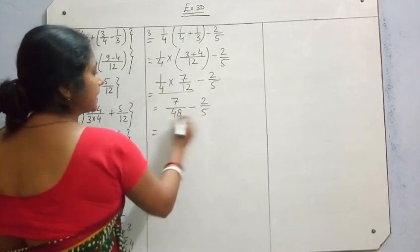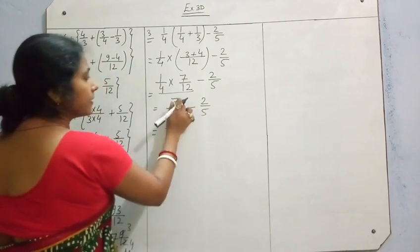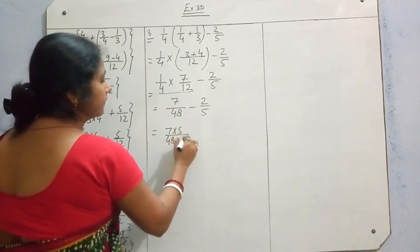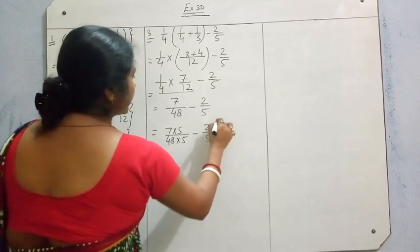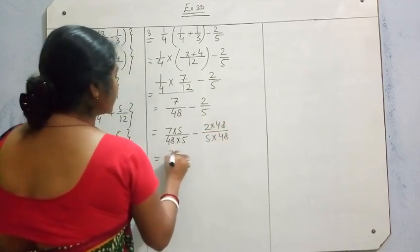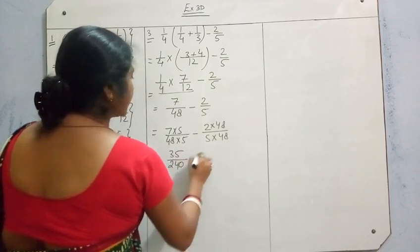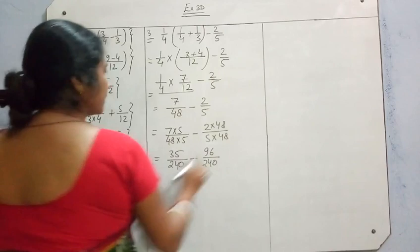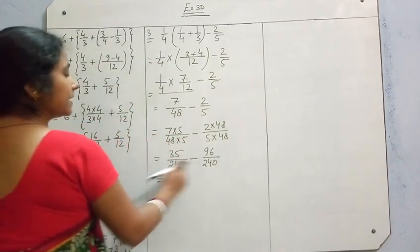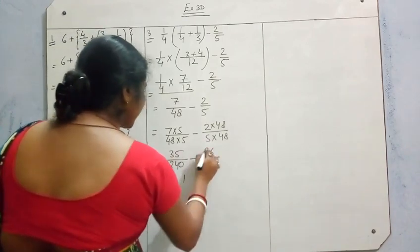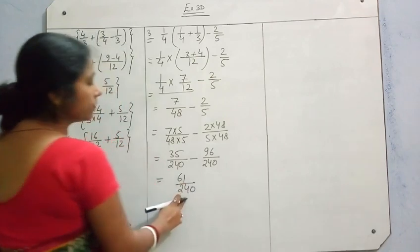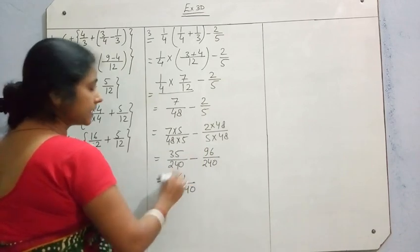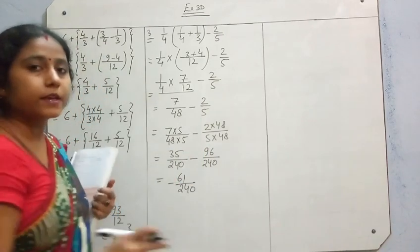Now we have to subtract using LCM. To find LCM of 48 and 5, multiply 7 by 5 giving 35/240, and multiply 2 by 48 giving 96/240. Now since 96 is greater than 35, we take the sign of the greater number: 96 minus 35 is 61. So the answer is minus 61/240.